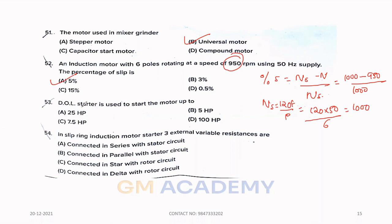Fifty-three. DOL Direct online starter is used to start the motor up to. Option B, 5 HP. Fifty-four. In slip ring induction motor starter, three external variable resistances are connected to the rotor. The rotor is star connected. So, option C is the correct answer.